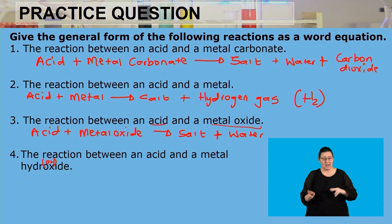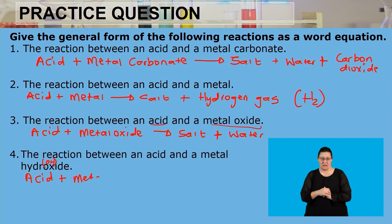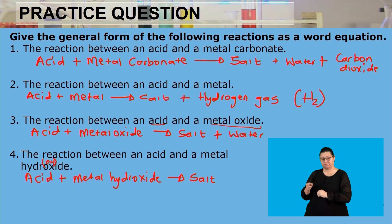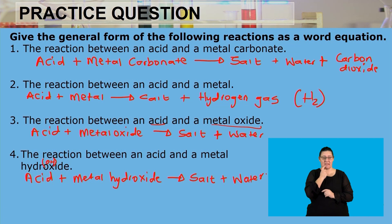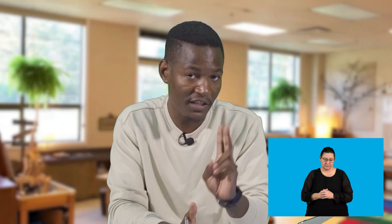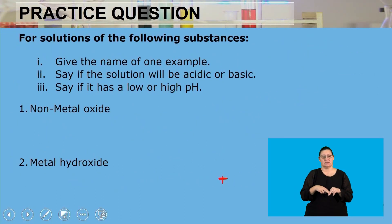So the reaction is: acid + metal hydroxide → salt + water, because the OH is given off by the metal hydroxide and the H is given off by the acid. When OH bonds with H, they form H2O — two hydrogen atoms and one oxygen atom. The remainder forms the salt. The pH of the salt depends on the acid and base that reacted.